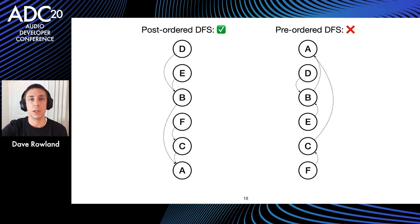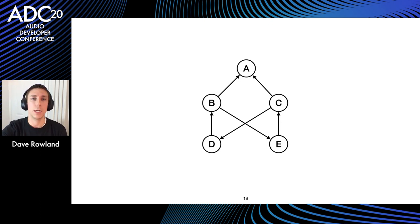This post-order means the connections always point in a consistent downward direction, so we never process a node that depends on a node that hasn't already been processed. Contrasting with the pre-ordering example, which had both upwards and downwards pointing arrows, you can see why post-ordering is better.